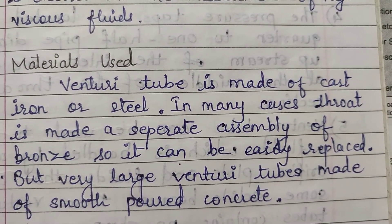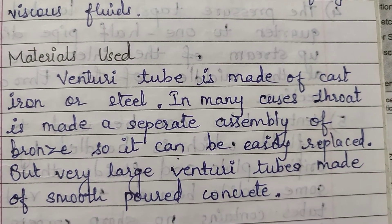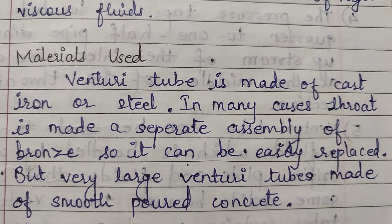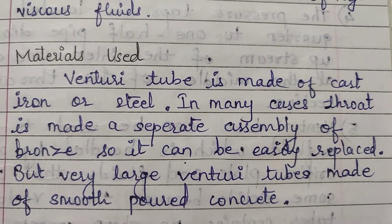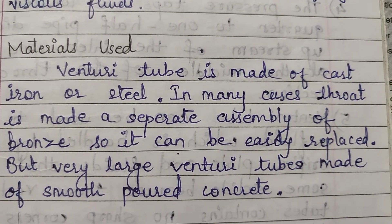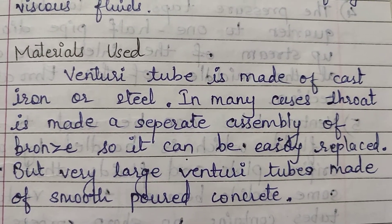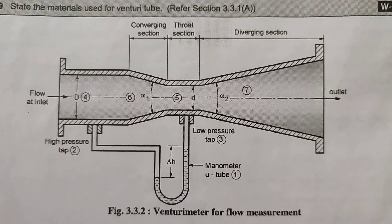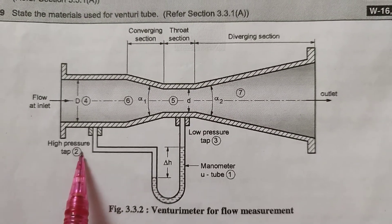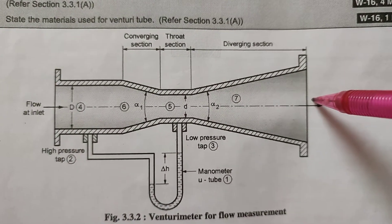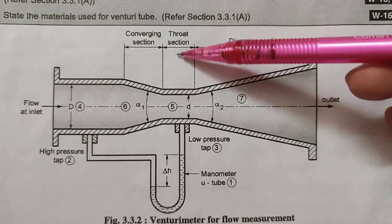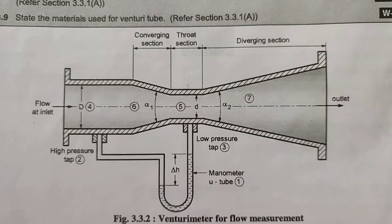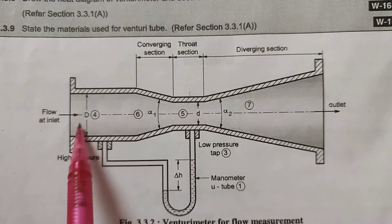Venturi tube is made up of cast iron or steel. In many cases, the throat is made up of a separate assembly of bronze so it can be easily replaced. Very large Venturi tubes are made of smooth poured concrete. Here is the flow inlet and here is the outlet. The throat section is made separate so that if there is a problem we can replace it. Venturi tube can be made of cast iron and steel.